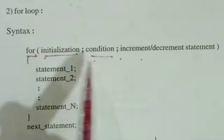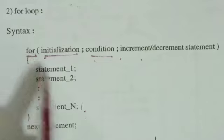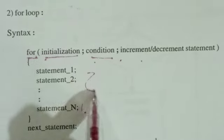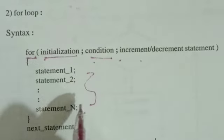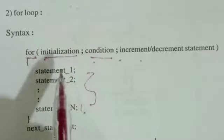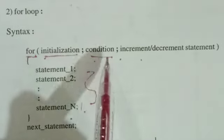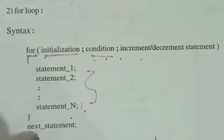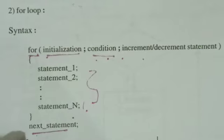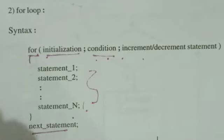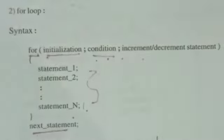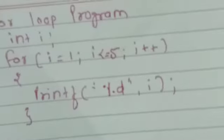Based on that condition, the statement block will execute. As long as the condition is true, the for loop will keep running and the statement block will be executed. Once the condition becomes false, the control comes out of the loop and the next statement is executed. Now let's see the program.